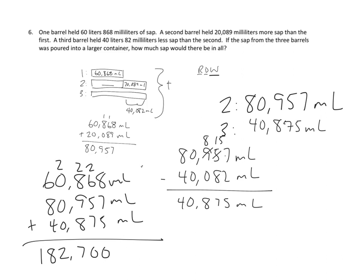And recall, we are not quite done because we need to do our write sentence. Let's see. All three containers would hold 182,700 milliliters. And now we're done with our write, and now we're done with our problem. Whew. Thank you for joining me. We'll see you next time.